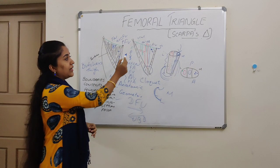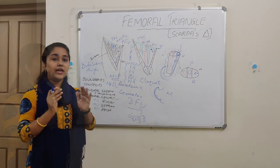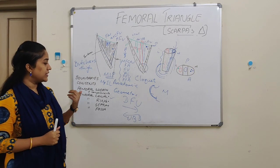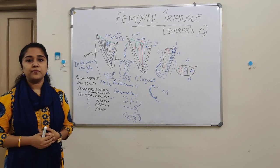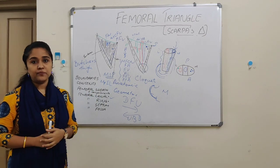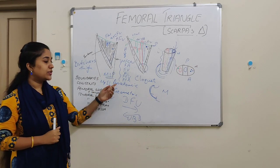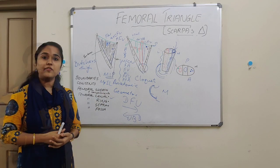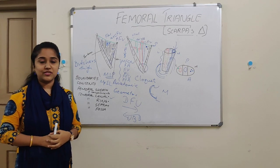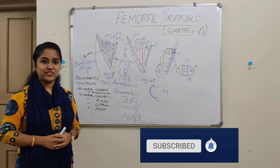The femoral nerve, after entering the femoral triangle, divides into two divisions — anterior and posterior — and between these two divisions passes the lateral circumflex femoral artery. We have discussed the boundaries, contents, femoral sheath and its compartments, femoral canal, femoral ring, femoral septum, femoral fossa, femoral hernia, butcher's thigh, anatomic and geometric triangles, and differential diagnosis of a lump in the groin. That's all about the femoral triangle. Please subscribe to the channel and press the bell icon for notifications. Thank you.